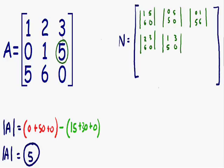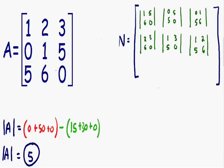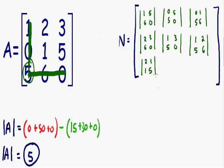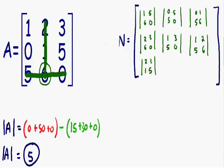For the bottom left position, from the middle right number, 5: cross out its column and row and we're left with the 2 by 2 matrix 2, 3, 1, 5. Place that in the bottom left position. Moving on to the bottom right number, 6: cross out its column and row and we're left with the 2 by 2 matrix 1, 3, 0, 5. Place that in the bottom middle position.